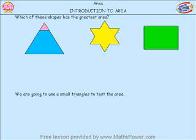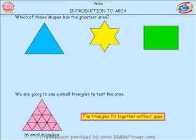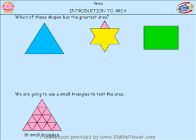Let's count how many of the small pink triangles fit on the large blue triangle. Ready? 1, 2, 3, 4, 5, 6, 7, 8, 9, 10, 11, 12, 13, 14, 15, 16. It took 16 small triangles, and the triangles fit together without gaps, so it truly shows the area.